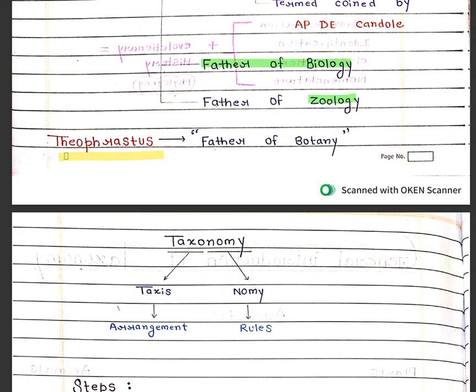One more scientist is mentioned in this chapter — Theophrastus. He was known as the father of botany.